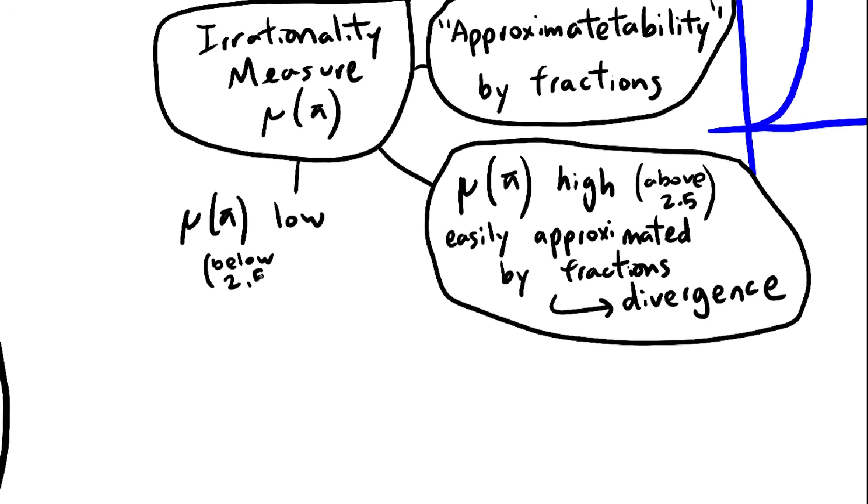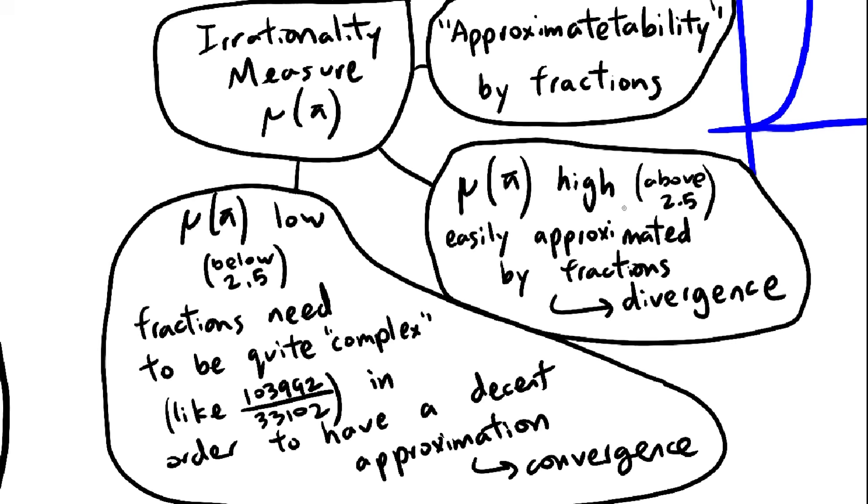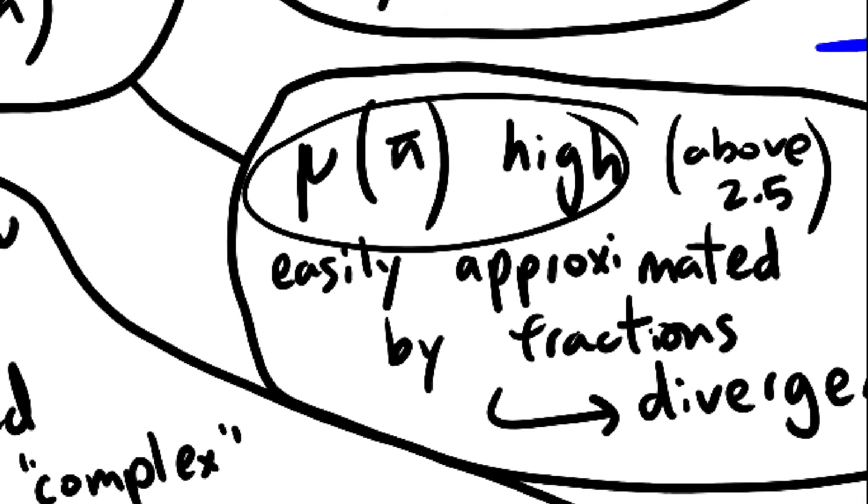But if pi has a low irrationality measure, then fractions need to get really big in order for it to be a good approximation. This may seem backwards because you would think that if a number had high irrationality measure, it would be very irrational and not close to fractions, but it's the other way around for some reason.